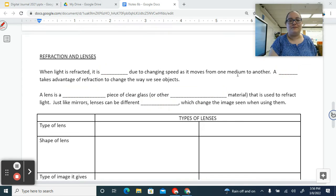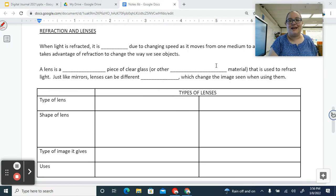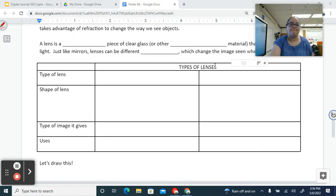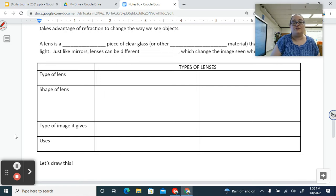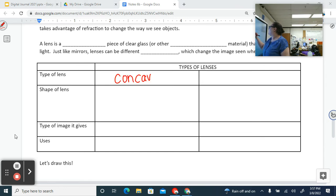Just like mirrors, lenses can be different shapes, which changes the image that we see when we use them. Again, pause it if you need to, but I'm moving on. Alright. So what types of lenses do we need to know about? So the two types of lenses that you have to know about, there are many types of lenses, okay? Like you need to know there's lots and lots of types of lenses. But the two types of lenses that you have to know about for me are concave and convex. Now, why are we talking about a plane lens? A plane lens. The definition is it's curved. A plane lens isn't a lens. It's a window. Okay.